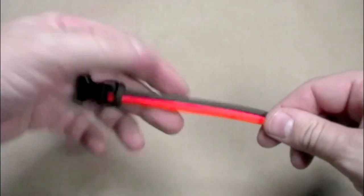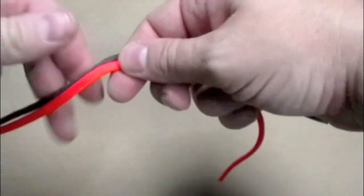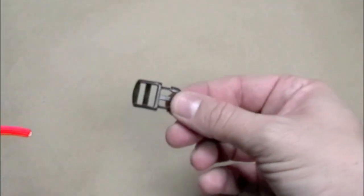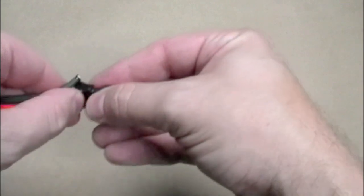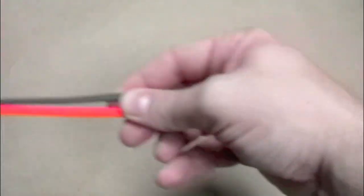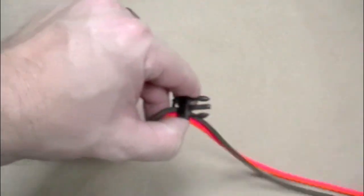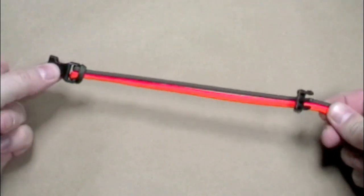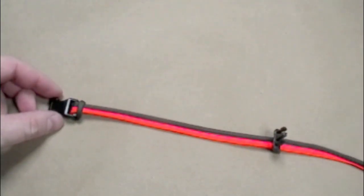The next step would be to take our cord and just stretch it out to the other end. We're going to take the male end of our buckle and we're going to feed the cord down through the top and then just pull it through back toward our female end. This is where we're going to measure for our wrist size.